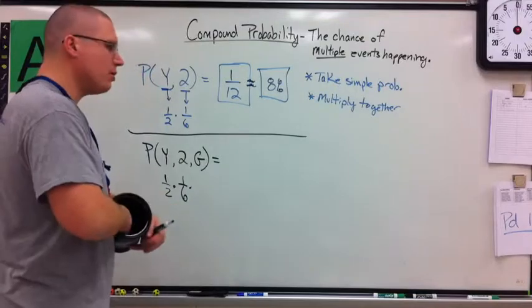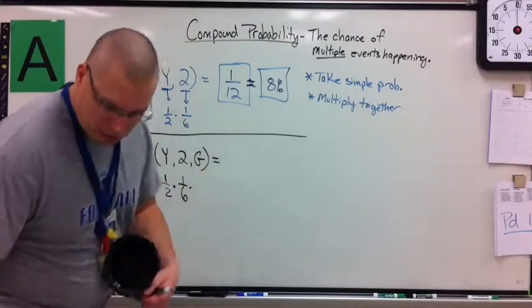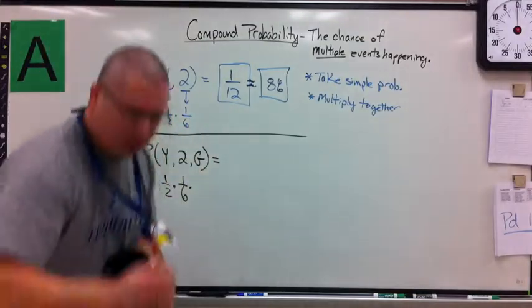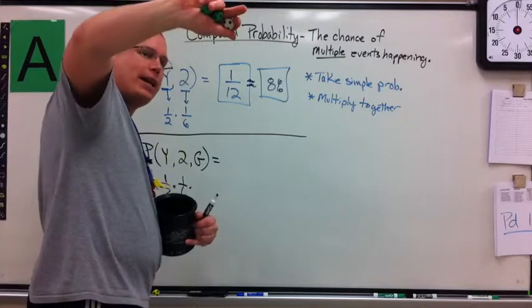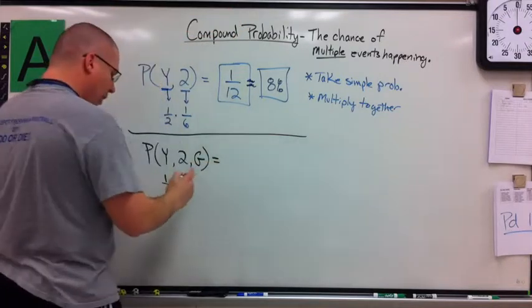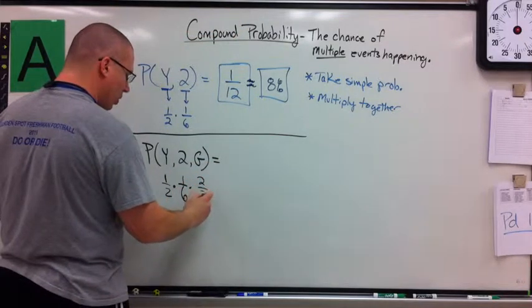Chance of a green. Well, remember, I had three of these. I had three. I had one white, two green. So I have two greens out of a total of three.